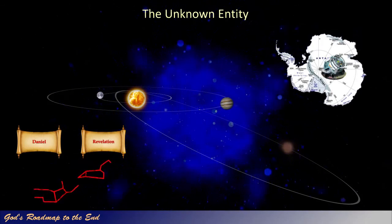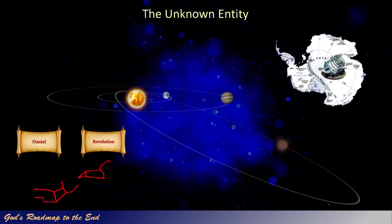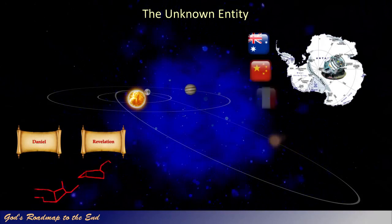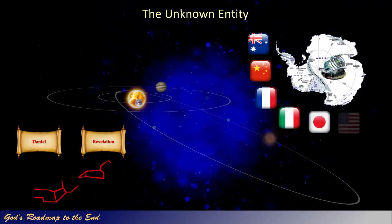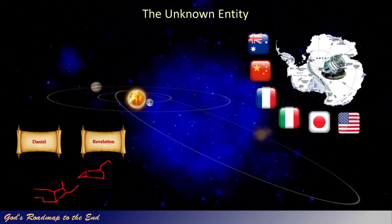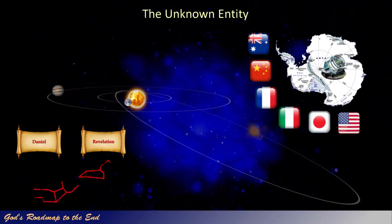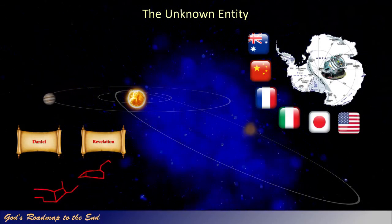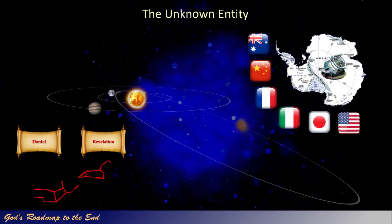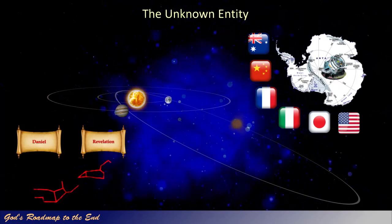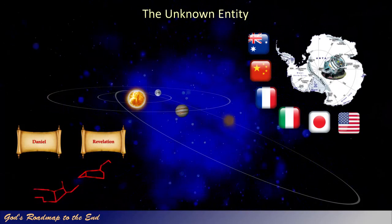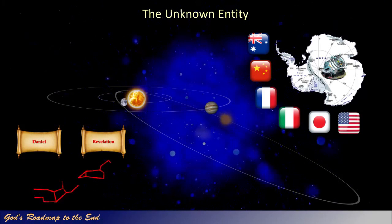Why the sudden interest in viewing objects in space using the infrared spectrum by Australia, China, France, Italy, Japan, and the USA, who are all working together on this project? Does it maybe have something to do with the fact that this object casts no light and that it can only be observed in the infrared spectrum? Does the highly tilted orbit that was mentioned in the 1992 press release mean that the object is best viewed from the South Pole?